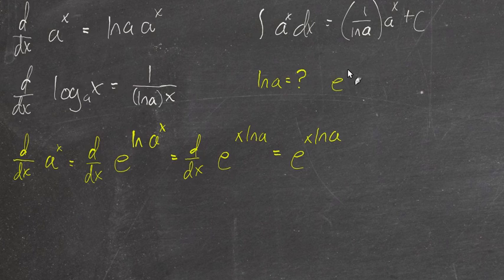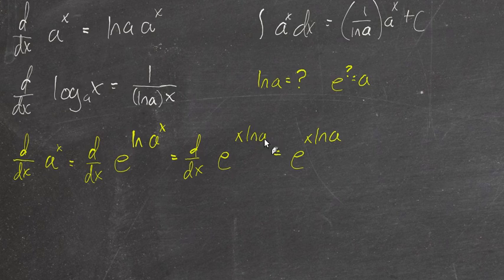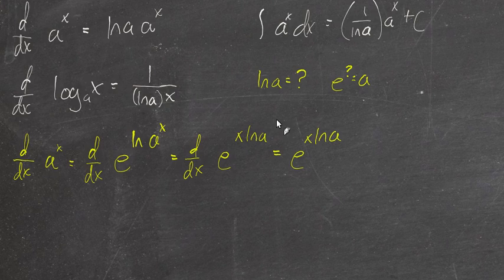The natural log of a is equal to some number. This number, if you take e to this number, you get a. That's what the natural log of a is. It's just that exponent. That's all this is. It's a number. So the derivative of a number times x is just that number. It's just the natural log of a.